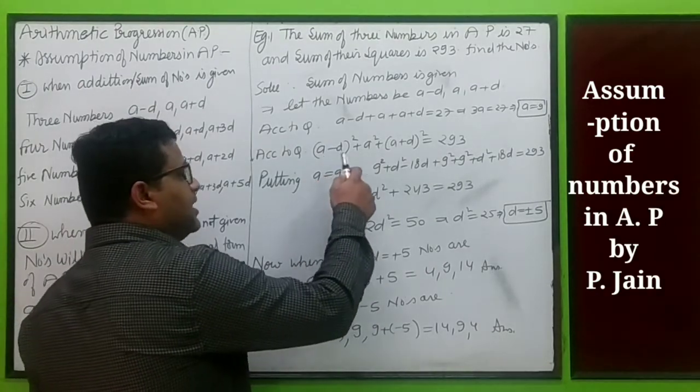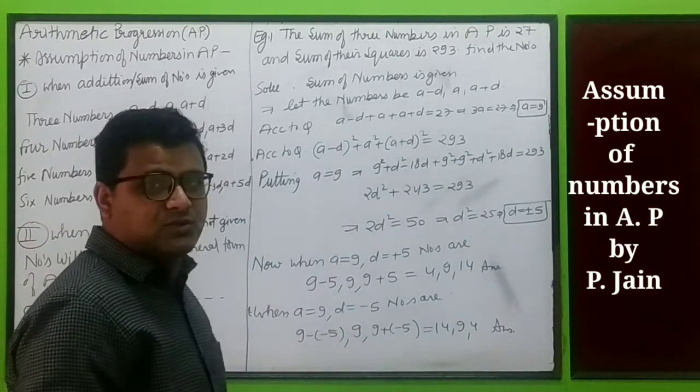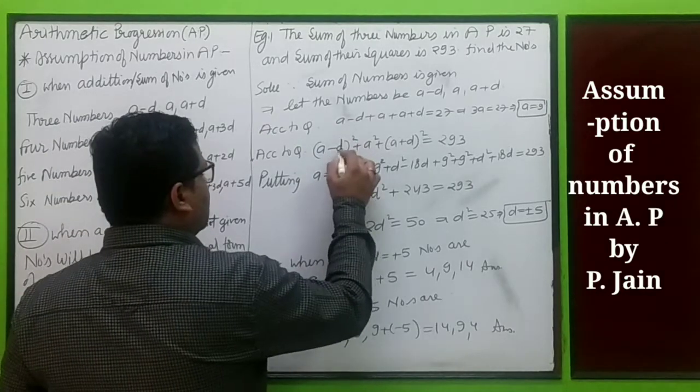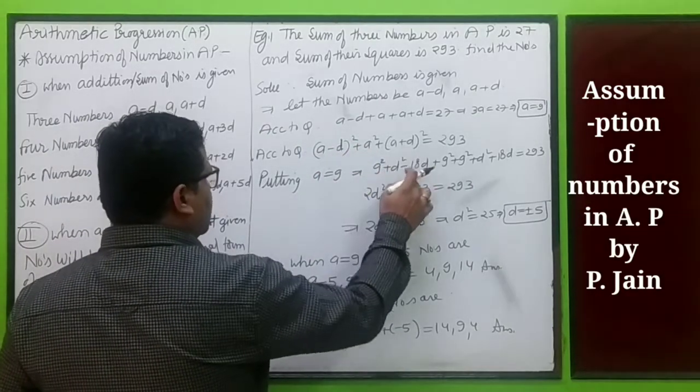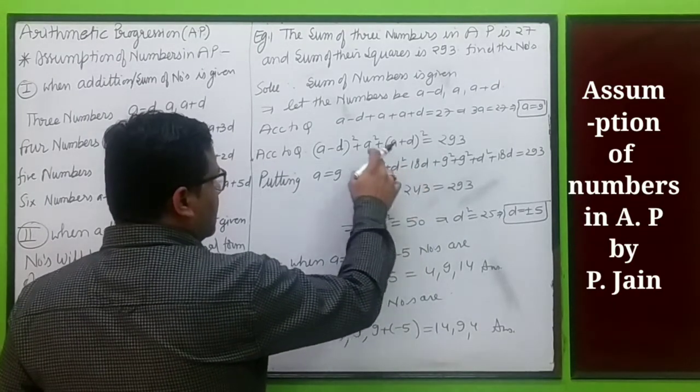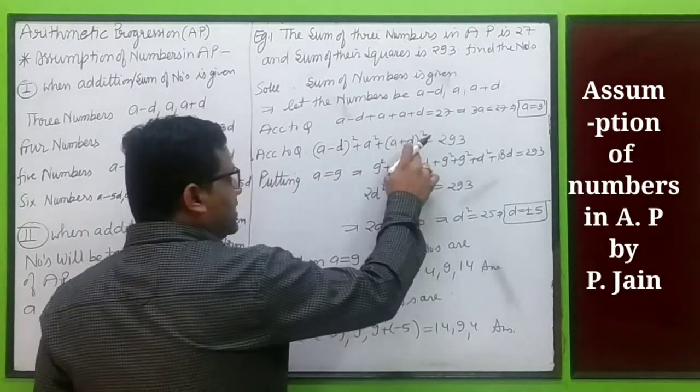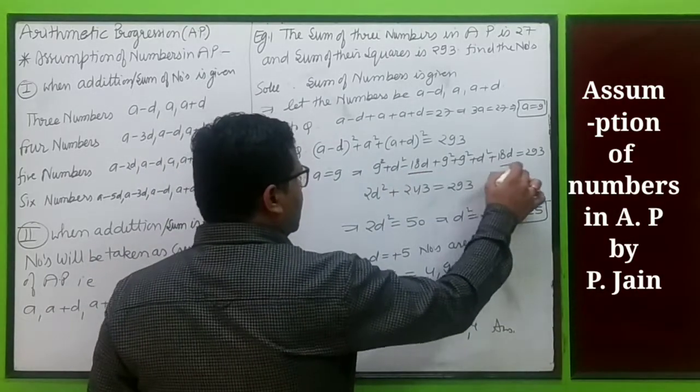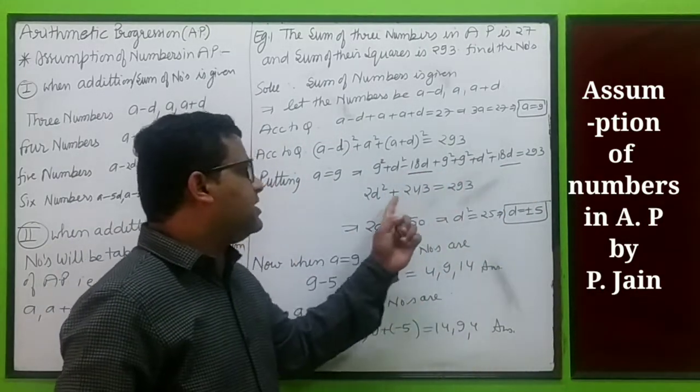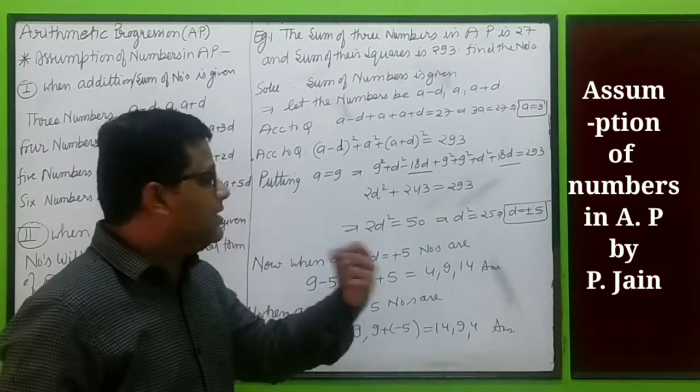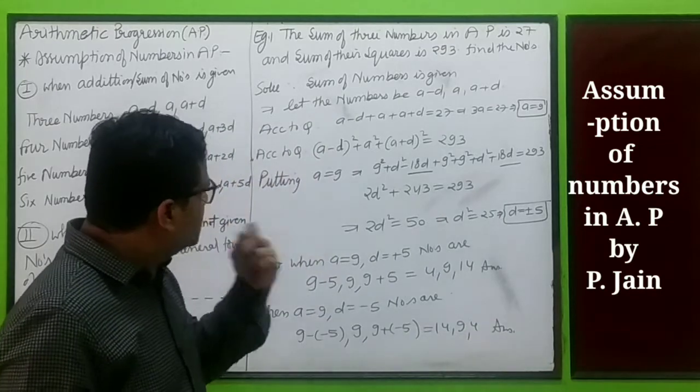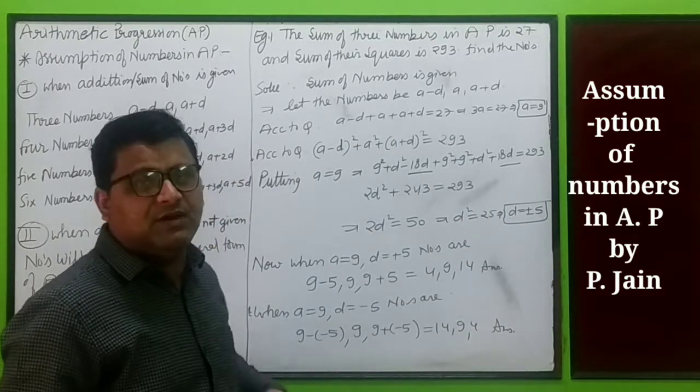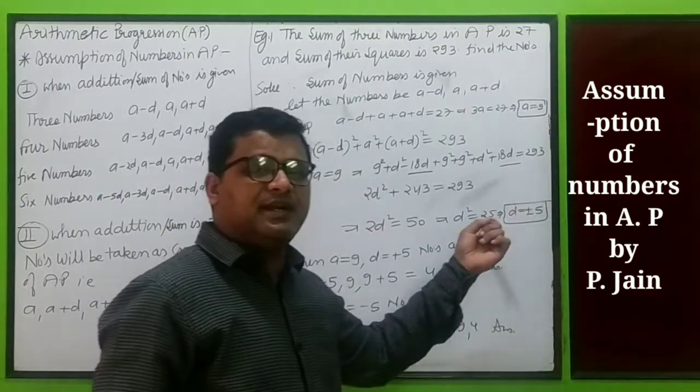3a equals 27, so a equals 9. The sum of their squares is 293, so (a minus d) squared plus a squared plus (a plus d) squared equals 293. Putting a equals 9 and opening the squares: 81 minus 18d plus d squared plus 81 plus d squared plus 81 plus 18d equals 293. The 18d terms cancel, leaving 243 plus 2d squared equals 293. So 2d squared equals 50, d squared equals 25, and d equals plus or minus 5.